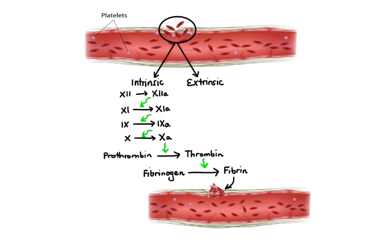The extrinsic pathway is triggered by tissue factor released from damaged cells outside the circulating blood. It starts with the activation of factor 7, which then activates factor 10. At this point, the intrinsic and extrinsic pathways converge into a common pathway, which again results in formation of a fibrin clot. Note that this is just a simplified description of the coagulation cascade and many details were intentionally omitted.